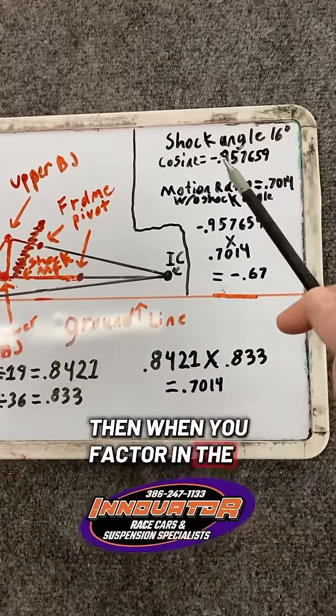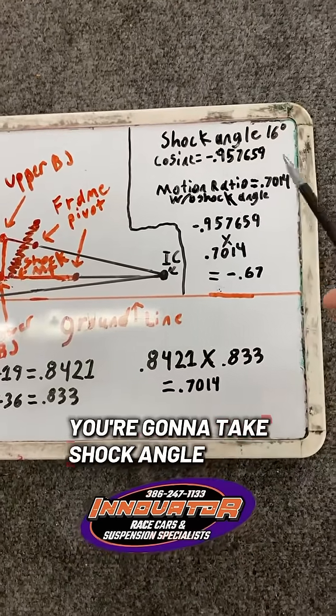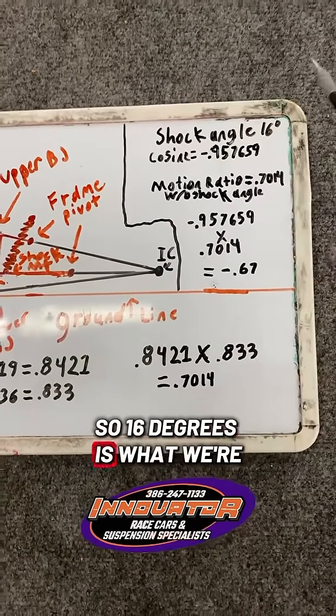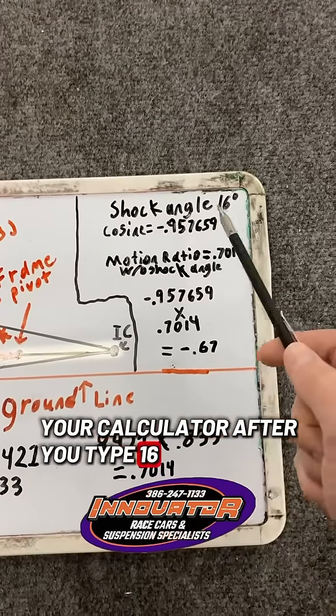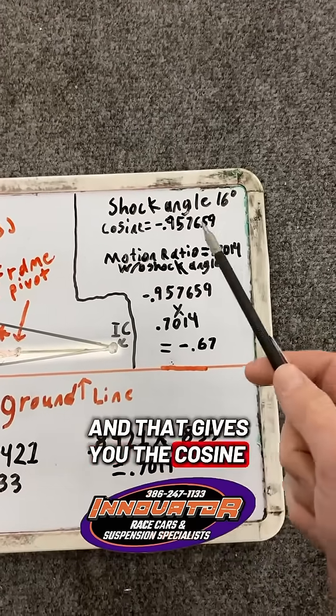Then when you factor in the shock angle, you're going to take the shock angle. So 16 degrees is what we're going to go with and you're going to hit cosine on your calculator after you type 16 in and that gives you the cosine. Very simple.